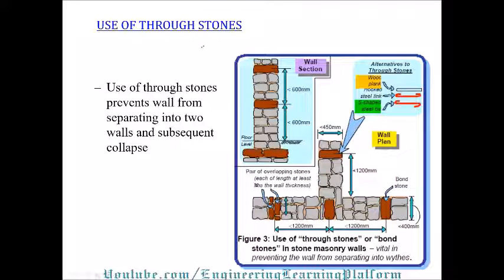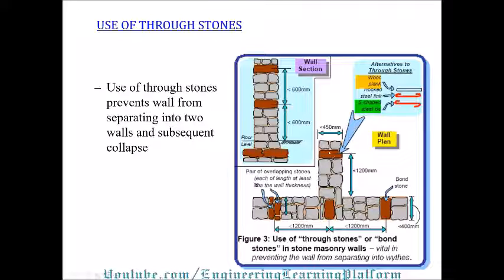The use of through stones is important, as are band beams. This shows band beams bracing the wall and the plan view showing the corner joint with the bond stone. Bond stone is important to prevent outward or inward buckling of the structure and to bond the structure together, similar to a band beam. Use of through stones and bond stones in masonry walls prevents the wall from separating into two wythes and subsequent collapse.